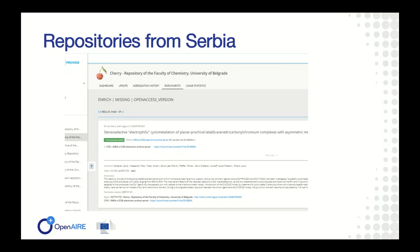We use the enrichment tool quite heavily to find open access versions. We do not use other types of enrichment because we developed our own more locally-oriented tools, but for finding open access versions we use this quite a lot. When we find there are some open access versions available, we send an alert to our repository managers so they can enrich the data also in their local repositories. That is almost everything I would like to share for this community call.